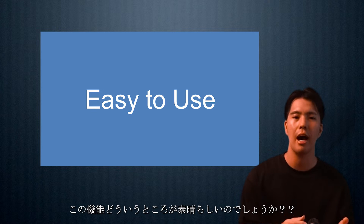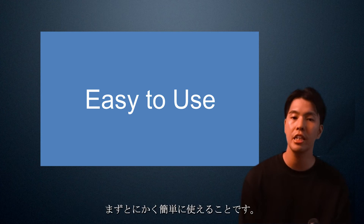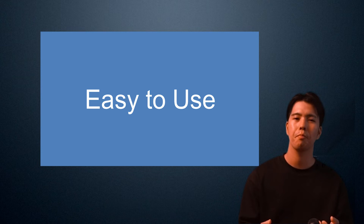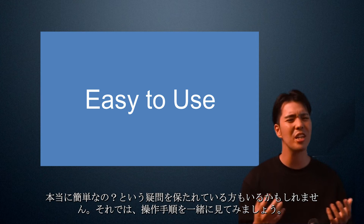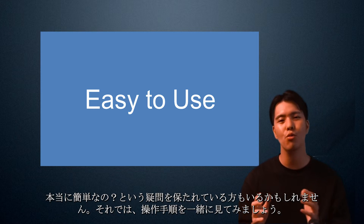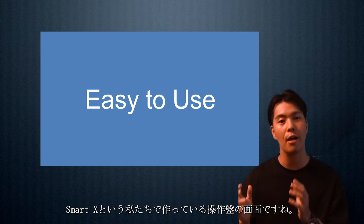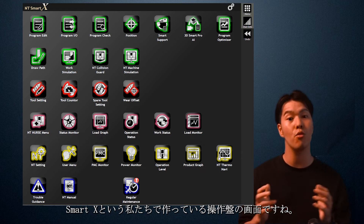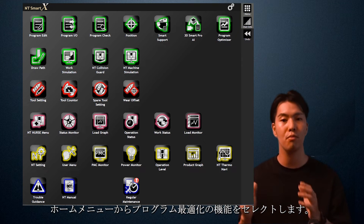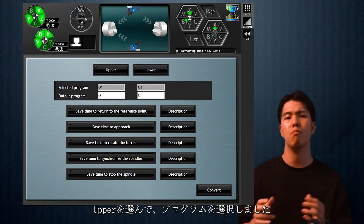What's so great about this feature? First of all, it's easy to use. Some of you may be wondering how it's easy to use. Let's take a look at how it works together. This is the screen of the SmartX control panel that we have created. From the home menu, select the Program Optimizer function. I select upper and then program.